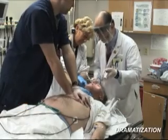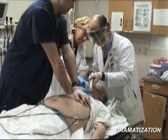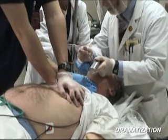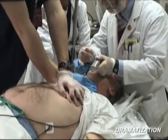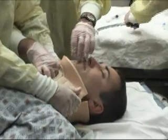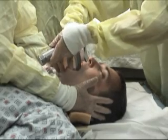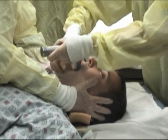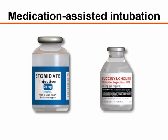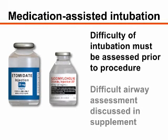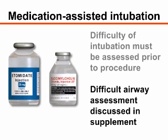In emergent cases, such as cardiac arrest, airway management is of paramount importance and there are very few contraindications to orotracheal intubation. Unstable cervical spine injury is not a contraindication, but intubation must be performed with strict in-line stabilization of the cervical spine. If neuromuscular blocking agents or sedatives are used to facilitate intubation, the difficulty of intubation must be assessed and planned for before proceeding. This assessment is discussed in more detail in the accompanying written supplement.